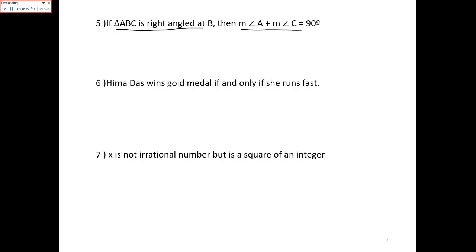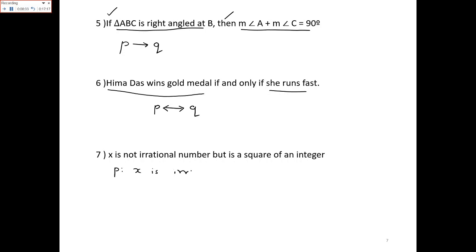Next: p implies q, so my symbolic form will be p → q. Then: p is 'Hima wins gold medal' and q is 'She runs fast', connected by IF AND ONLY IF, so it is p ↔ q. In the 7th example, p is 'x is irrational', so the negation of p is ¬p because of the word NOT. q is 'square of an integer', connected by BUT, so the answer is ¬p ∧ q.